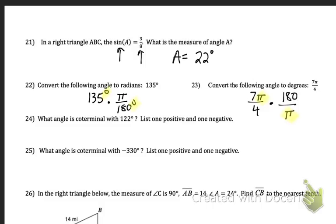Problem 24, what angle is coterminal with 122? List one positive and one negative. So coterminal angles are just 360 degrees away. You can add 360 as many times as you want, and it's going to be coterminal. You can also subtract 360 as many times as you want, and it will be coterminal. So two angles that you could use as answers here are 482 and negative 238. Problem 25, same thing. Give one positive, one negative. A positive one would be 30 degrees. A negative would be negative 690 degrees.